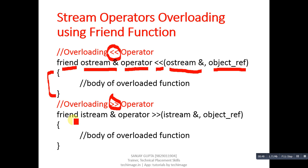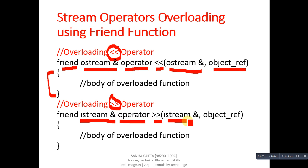The second function is for the extraction operator. Again, 'friend' is a keyword, then istream reference will be returned. istream is again the name of a predefined class. The operator keyword, then the extraction symbol, then istream reference and object reference will be received. Inside the curly braces the definition will be provided. ostream stands for output stream and istream stands for input stream — these classes are predefined.